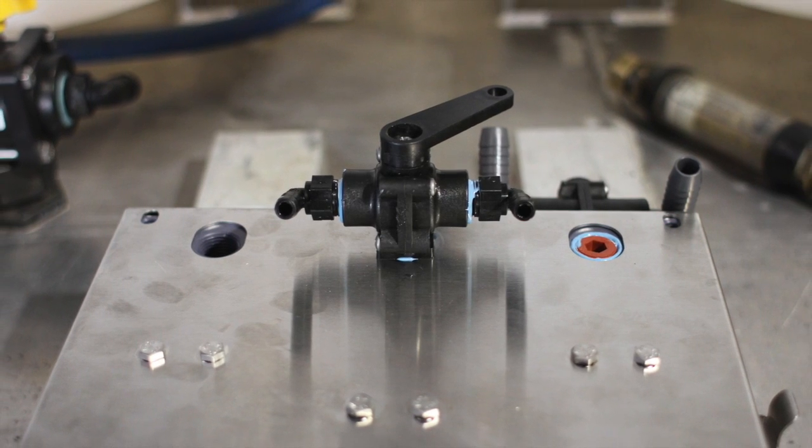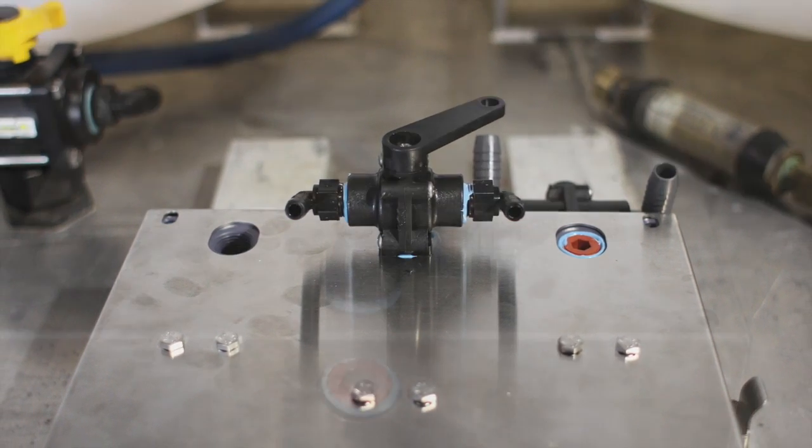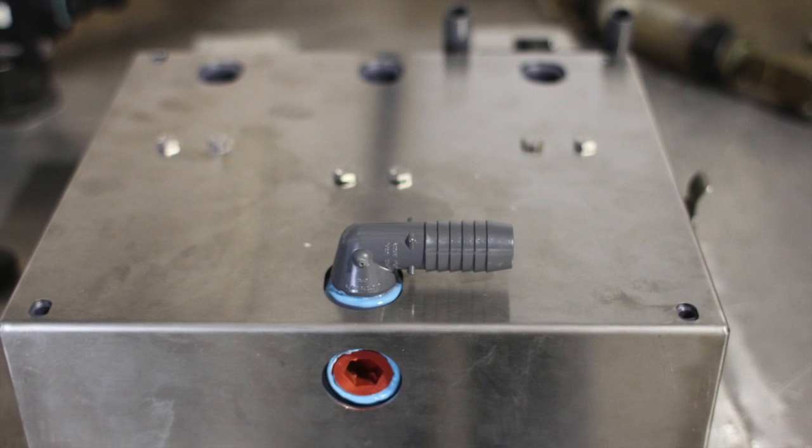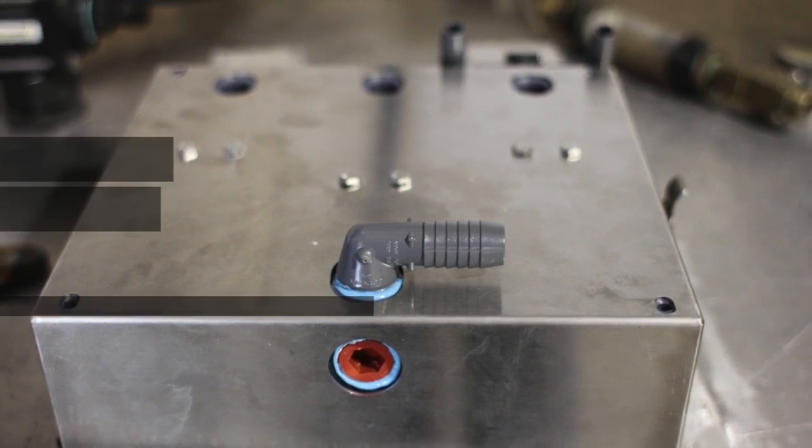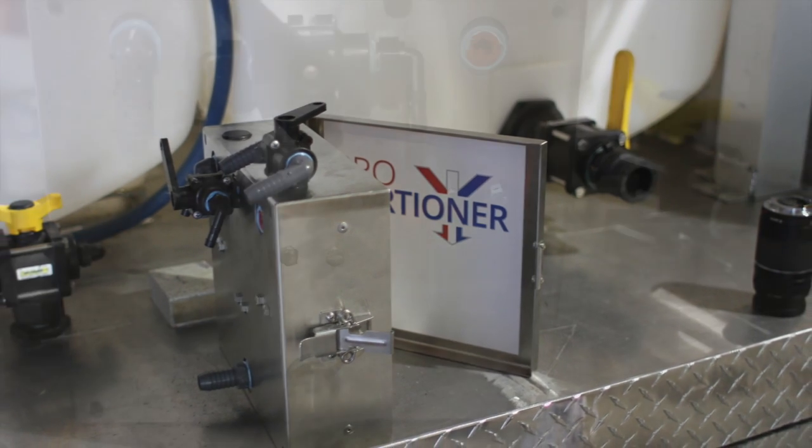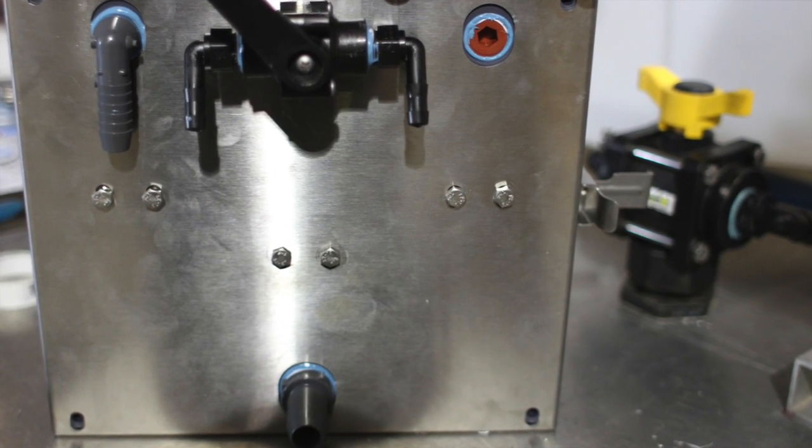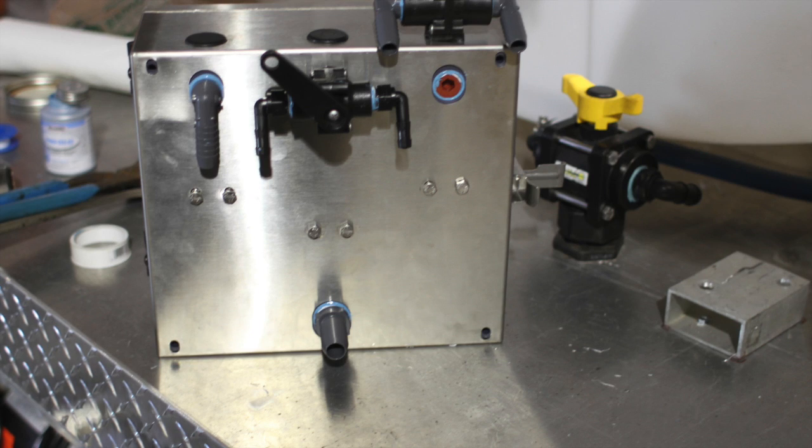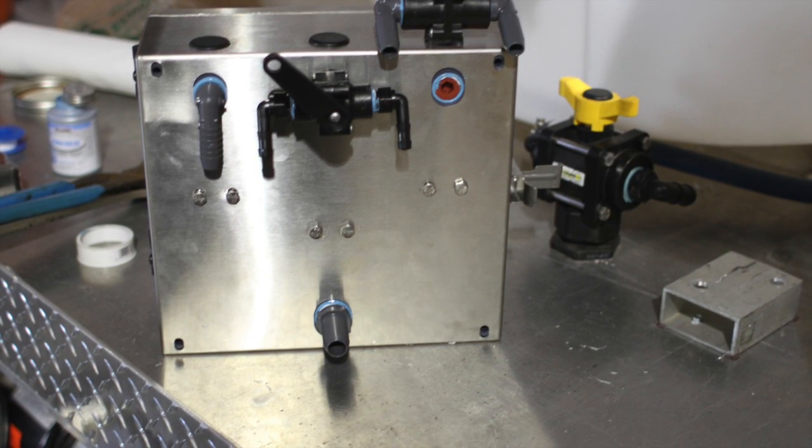This particular Proportioner is set up with both the flush kit and a two-way soap valve, allowing us to draw from both the soap tank or a drop tube by simply switching the three-way valve back and forth.